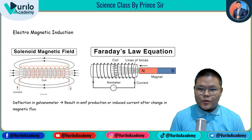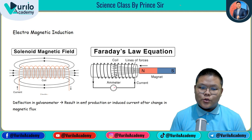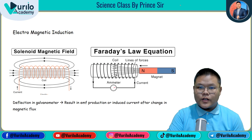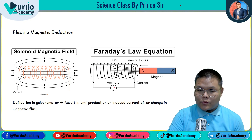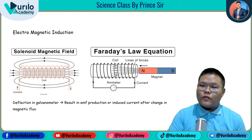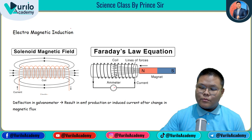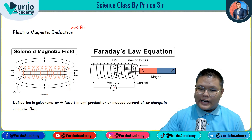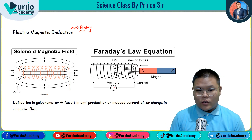Welcome back to Real Academy. We are starting the chapter on electromagnetic induction. Previously, we covered how to determine the direction of current in a straight wire and solenoid using a magnetic field — using the right-hand thumb rule and right-hand grip rule for solenoid and circular wire. Now we are going to learn about electromagnetic induction. This concept was given by the scientist Faraday, and Faraday's law is taught in classes 11-12, but we will touch on it in class 10.